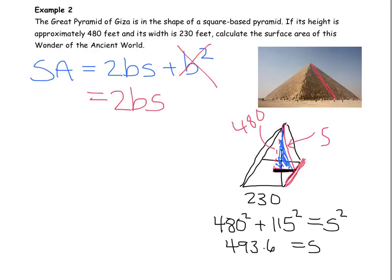Once you actually have the slant, then it's fairly simple from there. So I'll just continue back up here. We have 2. We know that our B is 230. We know that our S is 493.6.